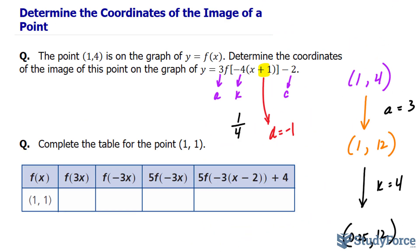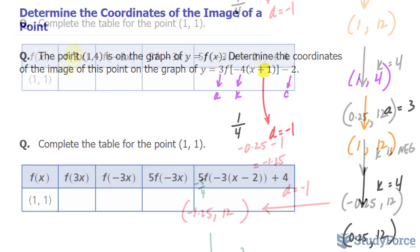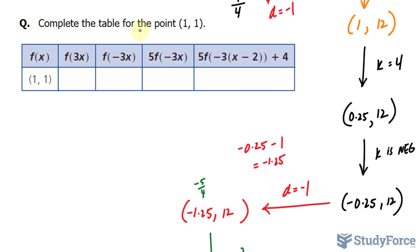So this is the image of this original point transformed according to this function. Now let's move on to a similar question shown here. They want us to complete the table for the point (1, 1).